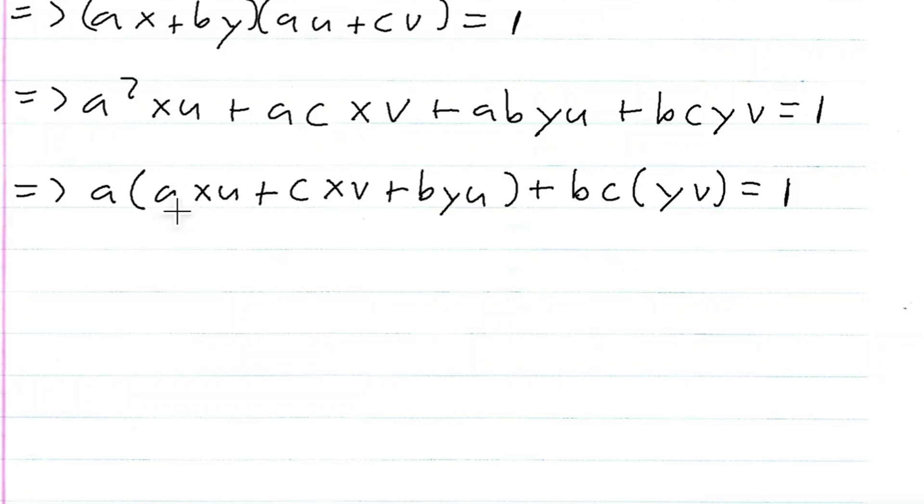Notice A is an integer, X is an integer, and U is an integer, right? C is an integer, X is an integer, V is an integer, B is an integer, Y is an integer, and U is an integer. So we know that the sum in here is, in fact, an integer, right? And we also know that this here is an integer.